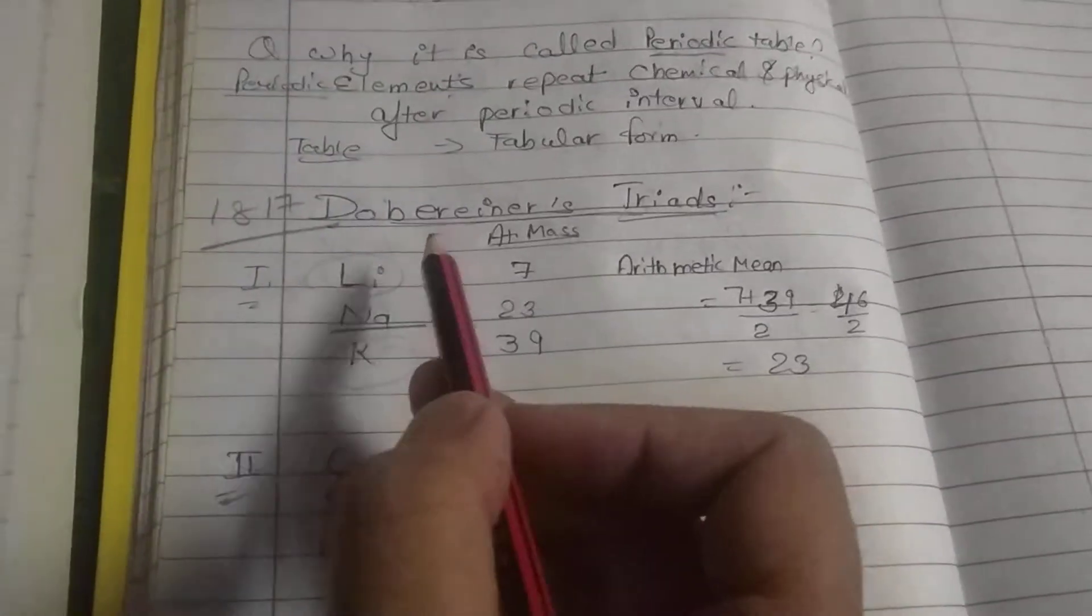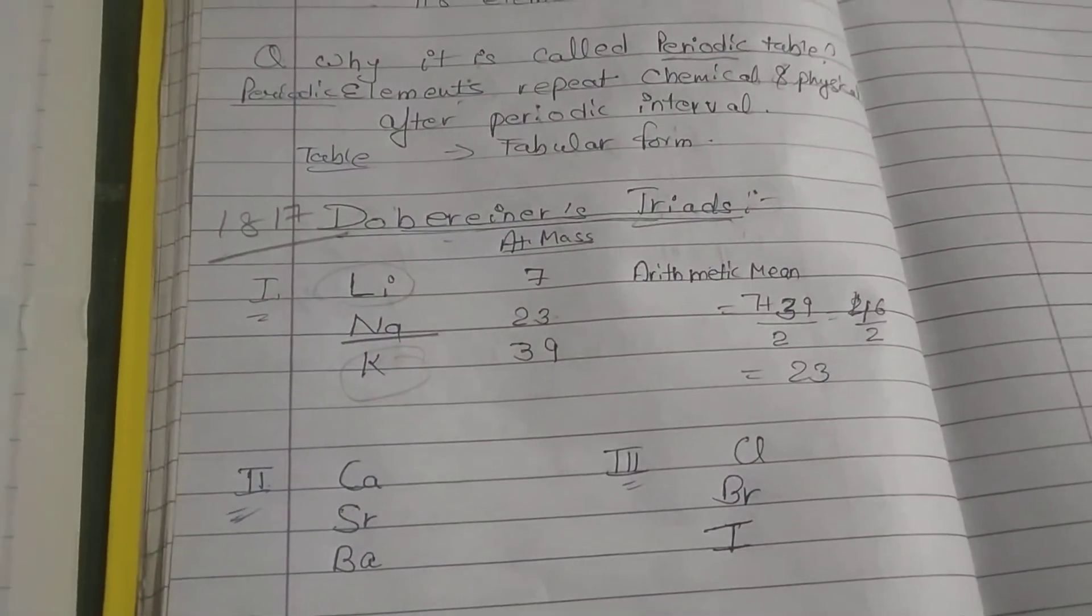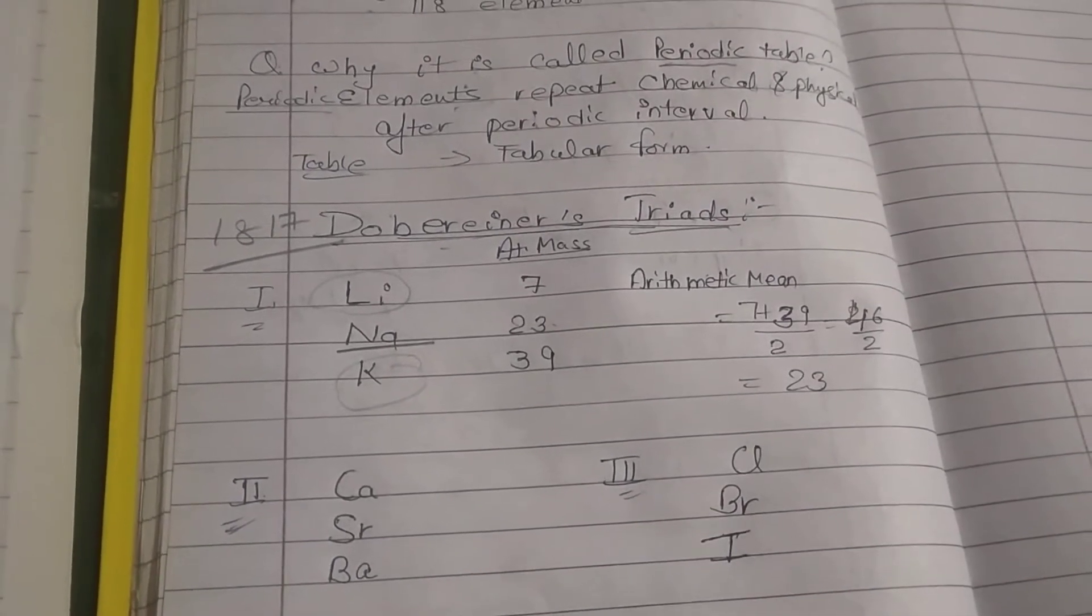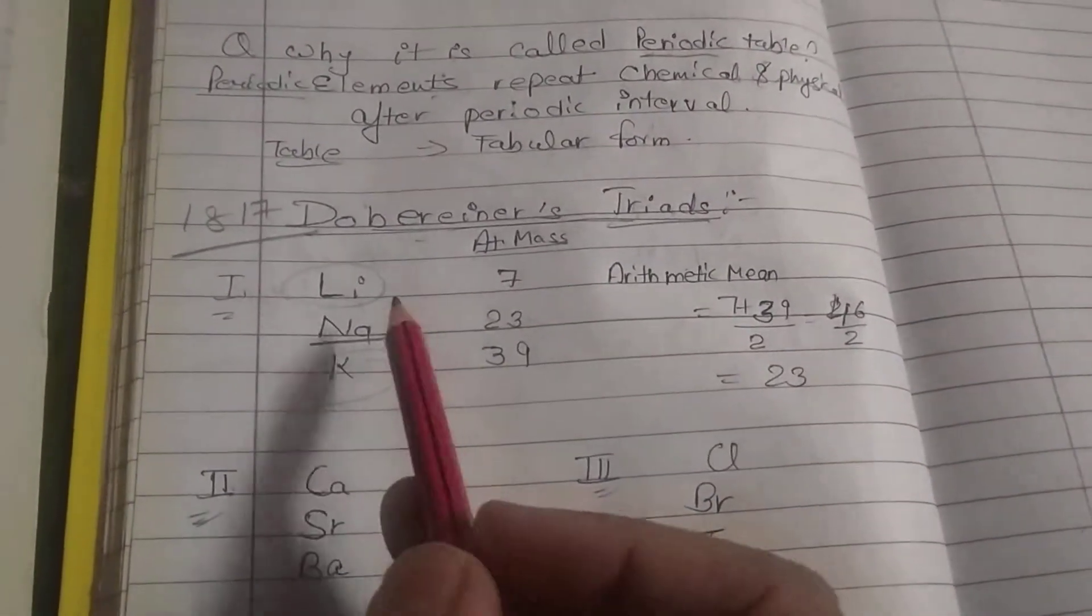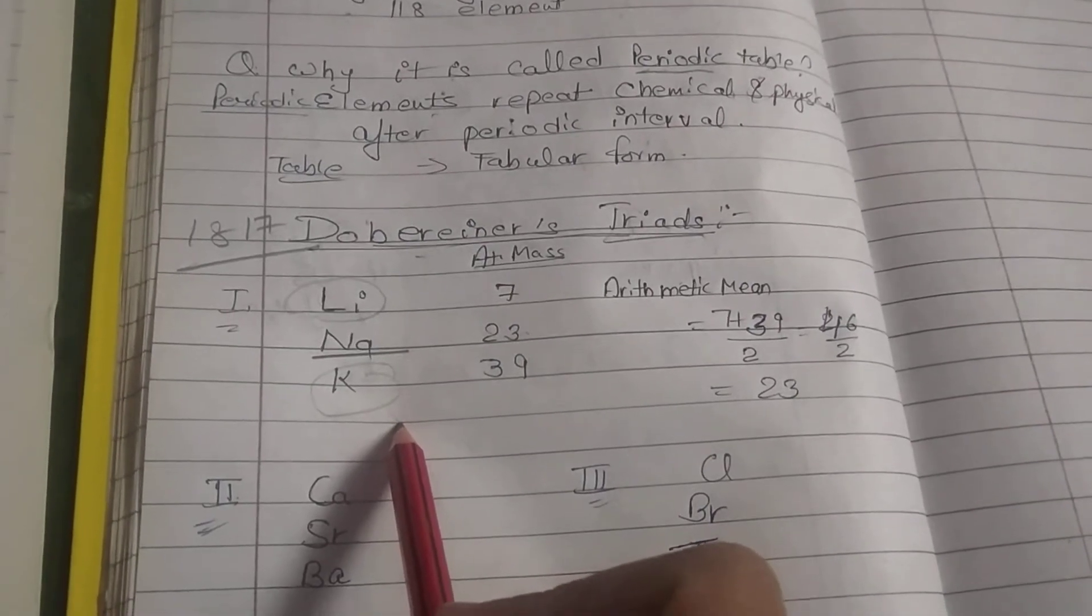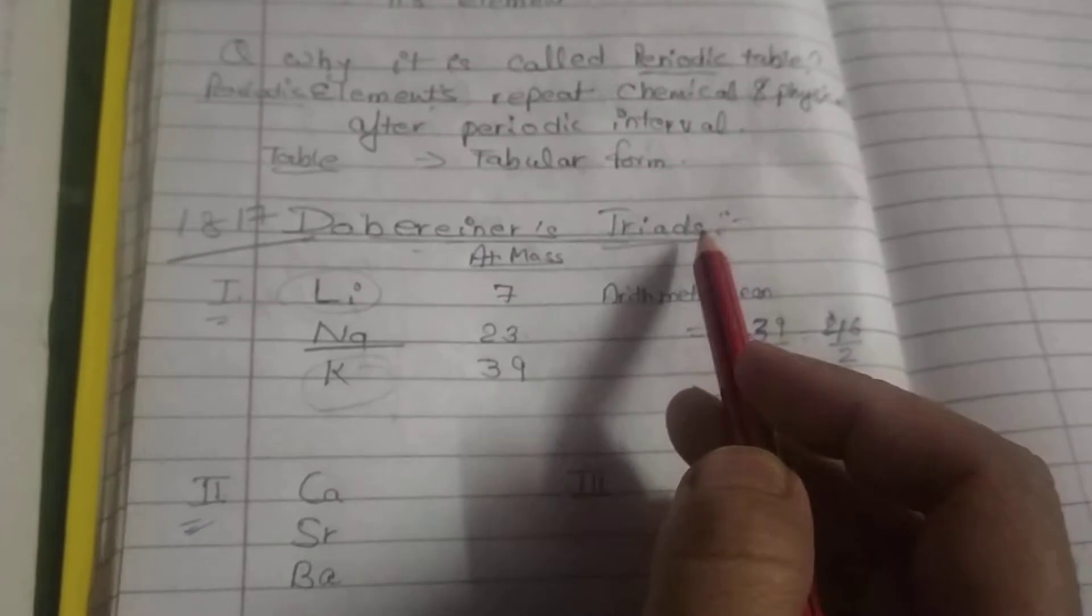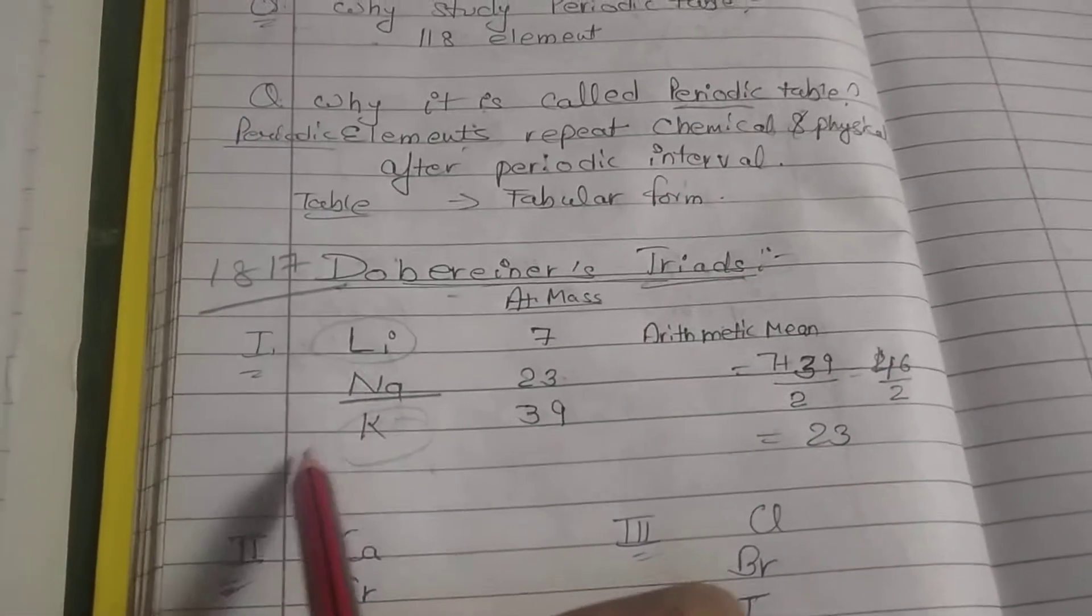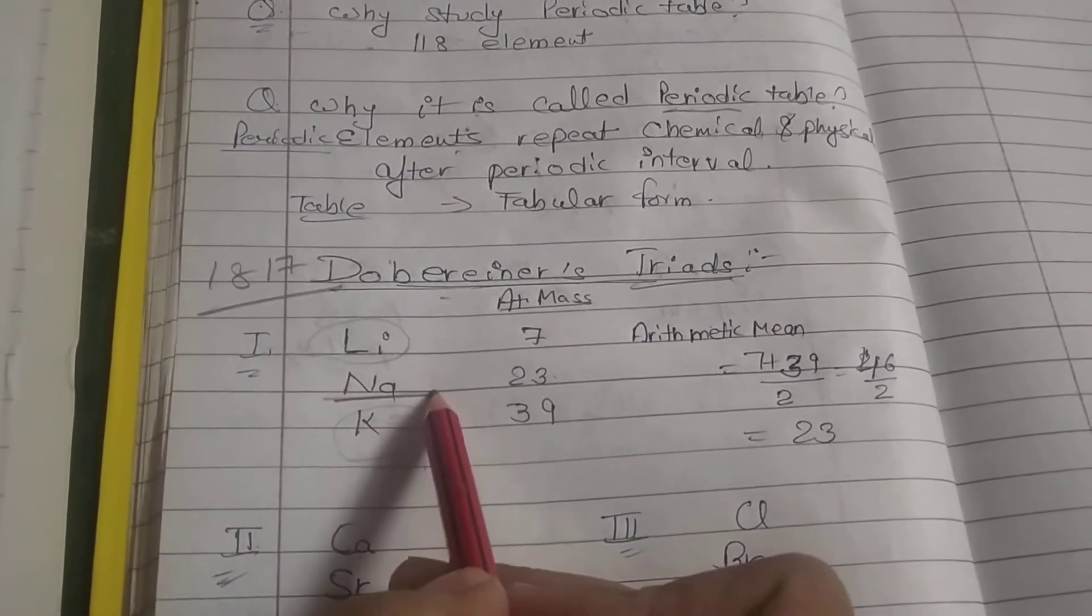Dobereiner said that if you arrange the elements in increasing order of atomic mass, then three elements of the group will have the same properties, which we call triads. First thing is the chemical properties are the same. Second thing is the atomic mass of the middle element.